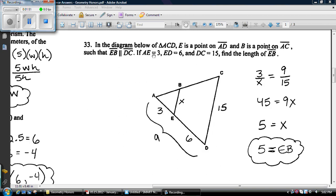33. Just draw it in. 3 and 6. You want to find out x. You know 15. Well, there's a proportion. This triangle is similar to the big one. So you say 3 is to x as 9 is to 15. Cross multiply and solve.